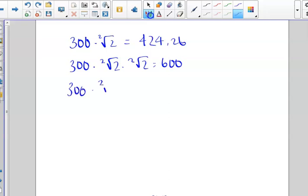we got 600. And if we keep going, we can multiply that three times, square root of two, times itself three times, and we should get 848.53.